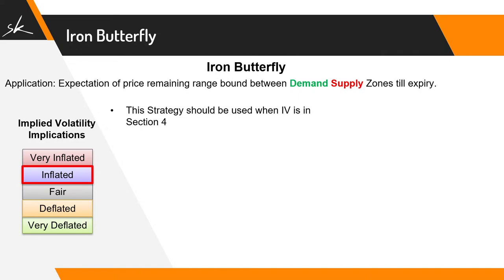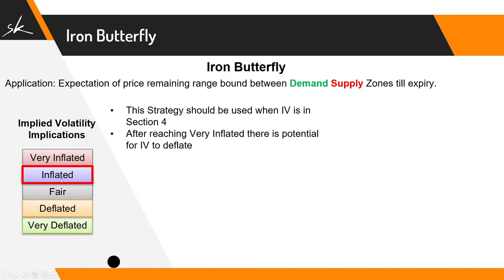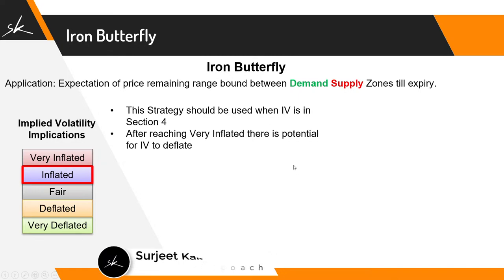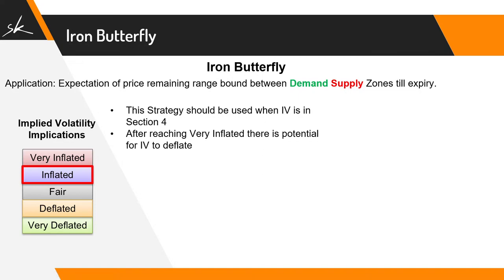The strategy should be used when implied volatility is in Section 4. After reaching inflated levels, there is potential for IV to inflate as well as deflate. Because it can go both ways, we don't want vega to hurt us a lot, and that is why we use the iron butterfly — to control that vega risk.